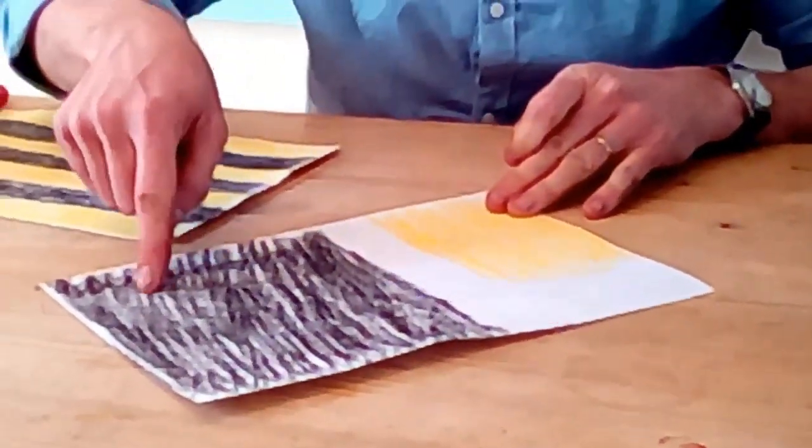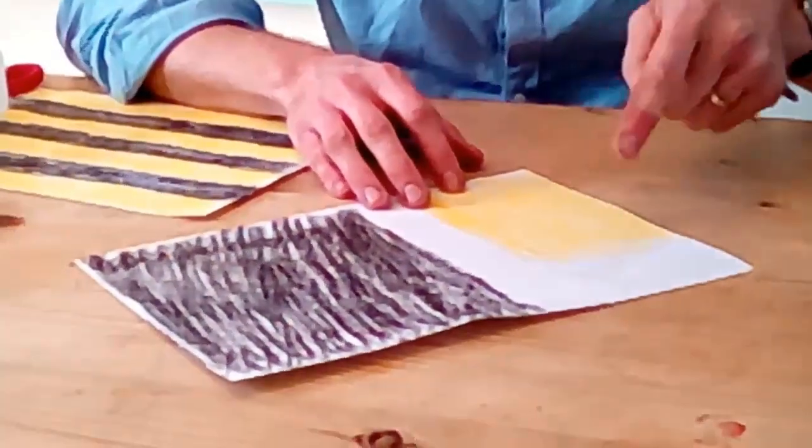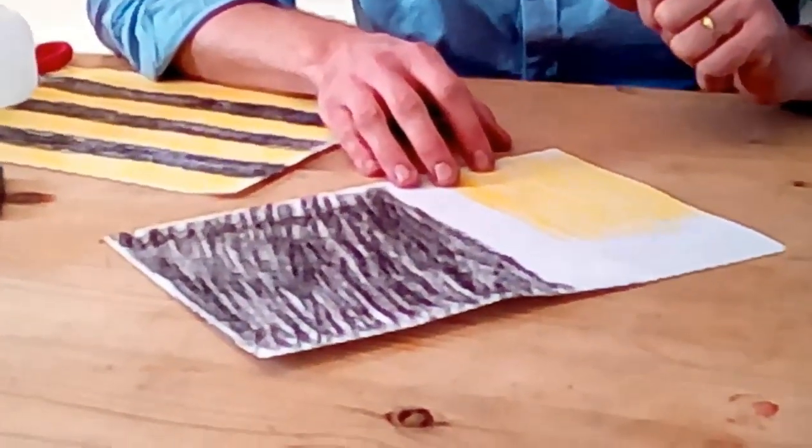So the black part is going to be the stinger, the bee's sting, and this yellow bit is going to be the bee's face. I'm going to leave a little bit of white here and that we'll use for the bee's eyes.